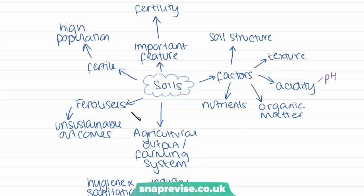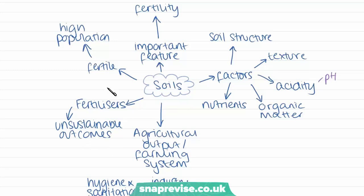In recent decades, fertility has been maintained artificially using chemical fertilizers, which has enabled high population densities to grow in areas that weren't traditionally very fertile. However, this will lead to unsustainable outcomes because fertilizers can leach into water systems and cause water pollution. So whilst fertilizers have aided population growth by making soils more fertile, they're not sustainable and they're not good for the environment. Areas with fertile soils are often associated with densely populated areas.